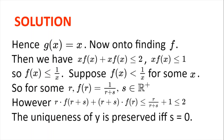Now on to finding f. Since g(x) = x, we have x·f(x) + x·f(x) ≤ 2, so 2·x·f(x) ≤ 2, meaning x·f(x) ≤ 1, and therefore f(x) ≤ 1/x. Let's see if anything goes wrong if f(x) is strictly less than 1/x for some x. Say for some r, f(r) = 1/r + s where s is a positive real. Now r·f(r) seems to satisfy r·f(r) ≤ 1.